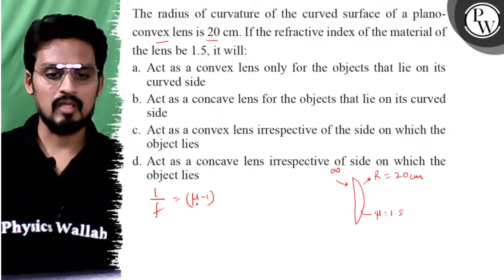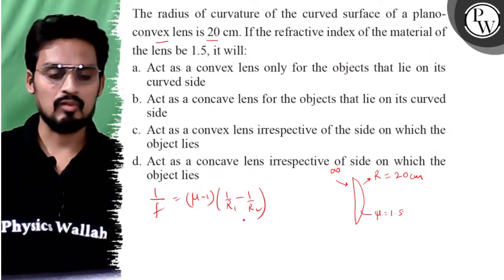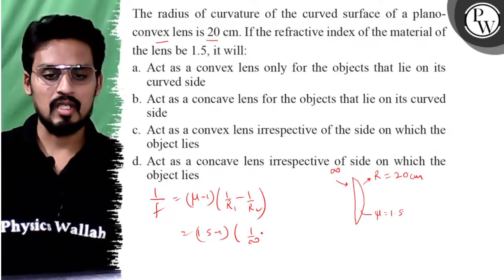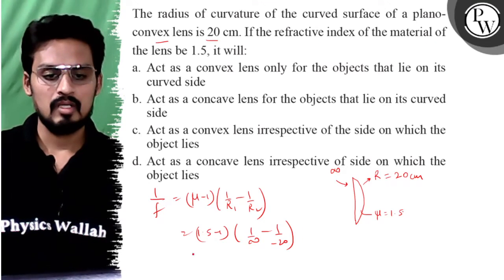So this is mu minus 1, 1 by r1 minus 1 by r2. That is 1.5 minus 1, 1 by r1 which is infinity minus minus 20. So this comes out to be the focal length.